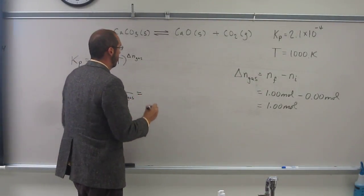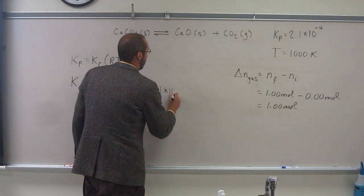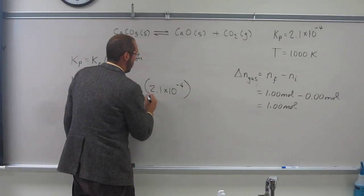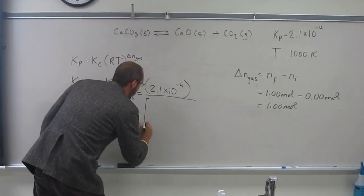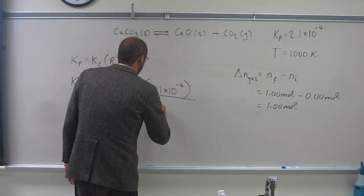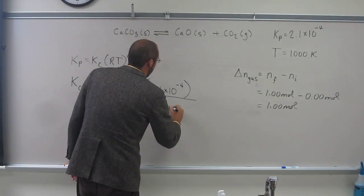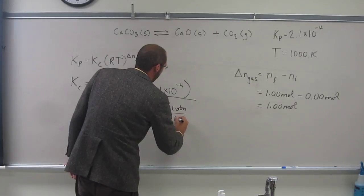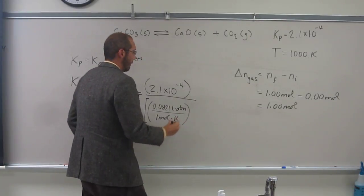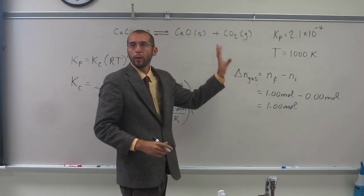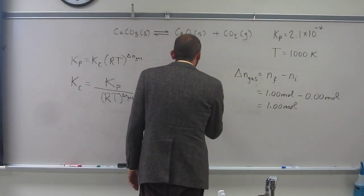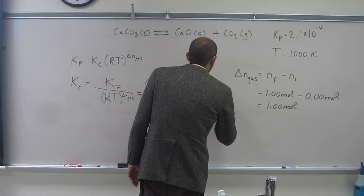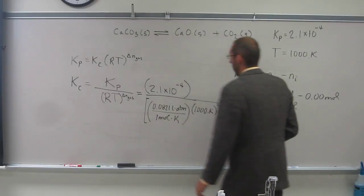So we have Kp 2.1 times 10 to the negative 4 divided by 0.0821 liter atm per mole Kelvin, and you honestly don't even have to expand it out because again, we're just going to kill all of our units in a second.